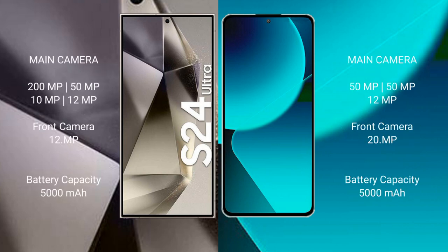Samsung Galaxy S24 Ultra features a rear quad camera setup: 200MP plus 50MP plus 10MP plus 12MP, and a front camera of 12MP.